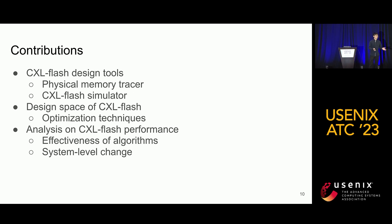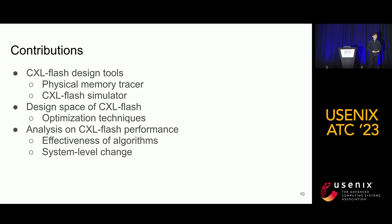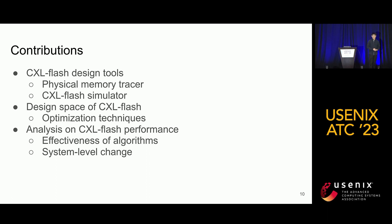In this work, we primarily want to use CXL flash to overcome the memory wall. First, we create two design tools: a physical memory tracer and a trace-driven simulator to model CXL flash. We then explore the design space of CXL flash by integrating existing optimization techniques. Finally, we analyze the effectiveness of existing algorithms in terms of improving CXL flash performance, and present a potential system-level change that can further improve device performance.